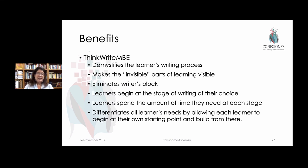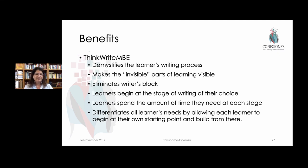In summary, what are the benefits? Basically, this demystifies the learner's writing process. Instead of thinking you're either a good or bad writer — a binary decision — there are multiple levels to writing. Oftentimes people beat themselves up because they didn't produce something written, but maybe they were doing a lot of thinking, and this celebrates those invisible parts of writing. Basically, it's a solution to writer's block, because you can never be blocked when there are hundreds of activities to do. If you find yourself stuck at a research or proofreading stage, go to a different stage and do other activities that will unblock you. Overall, learners begin at the stage of their choice and spend the amount of time they need at each stage, which differentiates all learners' needs by allowing each to begin at their own starting point and build from there.